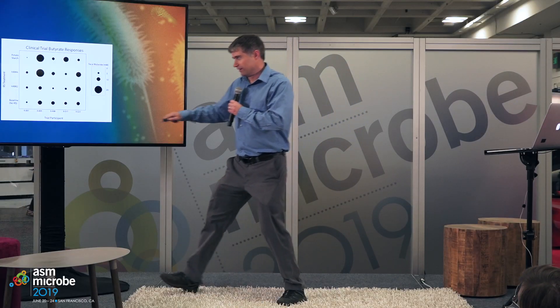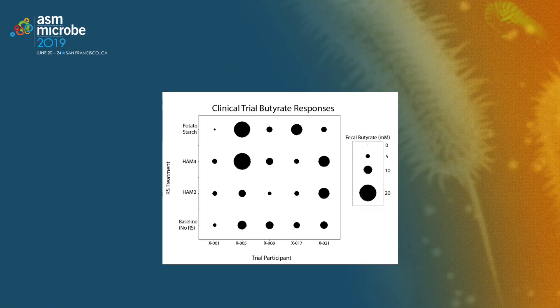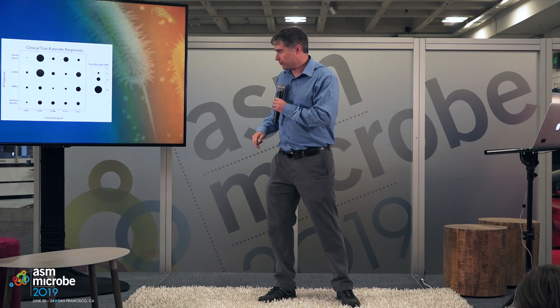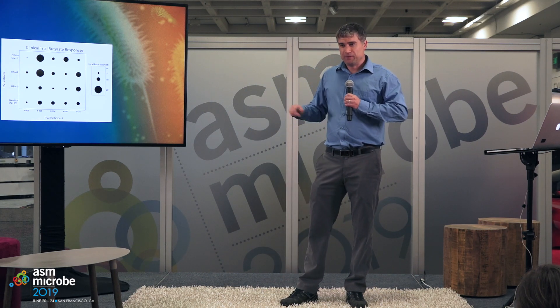In the clinical trials we couldn't test as wide a variety of resistant starches, but we ran a crossover trial with three different types and observed what happens to each person's microbiome when they consume each one. For example, person number five had really great responses to the potato starch and HAM4 — a type of high-amylose cornstarch — but not to the other one. We see different patterns across people, very similar to what we observed in the in vitro studies. We really want to understand what's going on in these microbiomes that leads to this variability in butyrate changes.